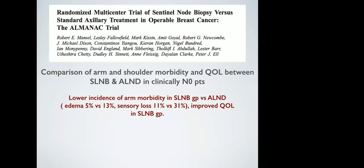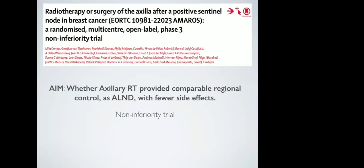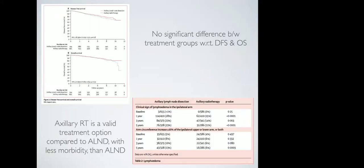The ALMANAC trial, a randomized study comparing arm and shoulder mobility and quality of life between sentinel lymph node biopsy and axillary lymph node dissection groups in clinically N0 patients, confirmed lower incidence of arm morbidity and improved quality of life in the SLNB group. The AMAROS trial, a non-inferiority randomized control trial, compared axillary dissection with axillary radiotherapy after positive sentinel node biopsy. It found no significant difference between the two groups, concluding axillary RT is a valid treatment option with less morbidity - though long-term data is still awaited.